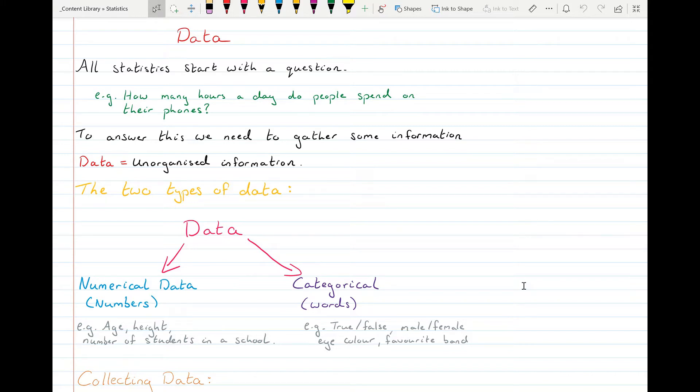All statistics start with a question. For example, how many hours a day do people spend on their phones? The answer could be different for me as it is for you. So we have to use statistics to get a better idea of what is going on for a large group of people. We call that gathering information or gathering data. Data is unorganized information.